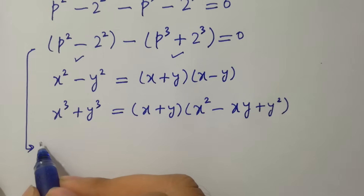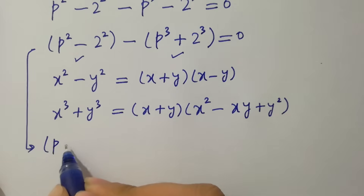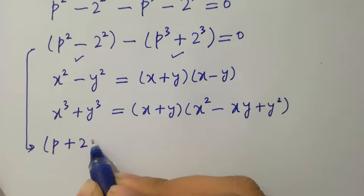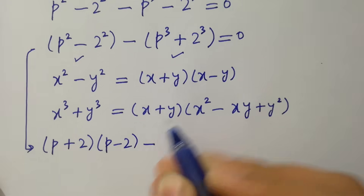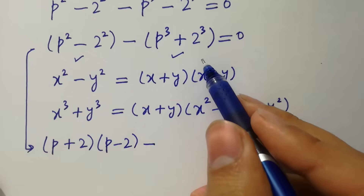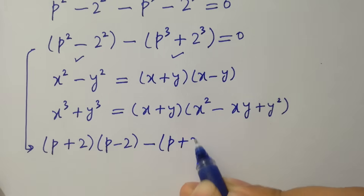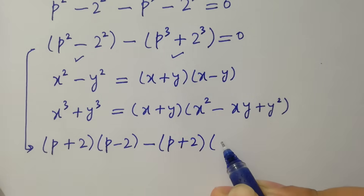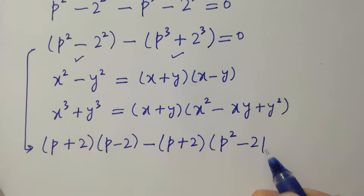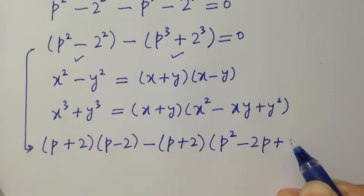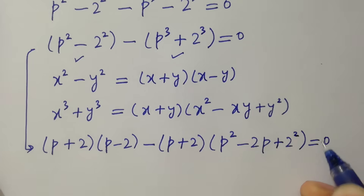Applying the formulas: p squared minus 2 squared becomes (p plus 2)(p minus 2), and p cubed plus 2 cubed becomes (p plus 2)(p squared minus 2p plus 4), so the full expression equals zero.